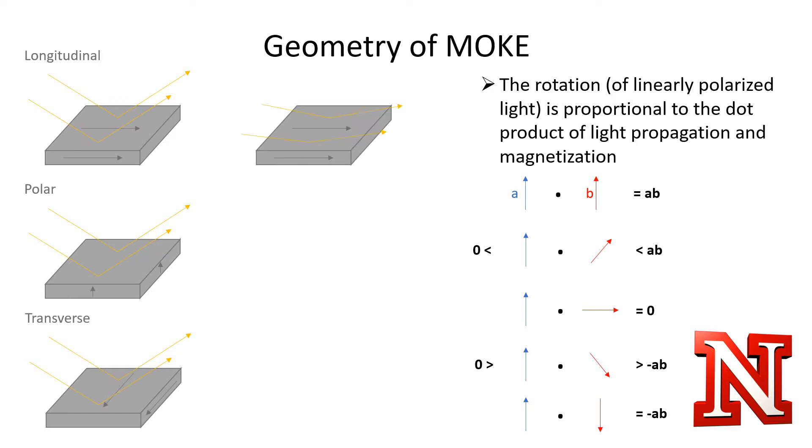For the longitudinal geometry, this means a very shallow approach, and for the polar geometry, this means sending the light almost straight towards the material. The transverse geometry, however, is always perpendicular and gives the dot product zero.